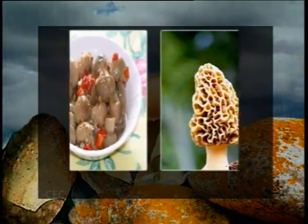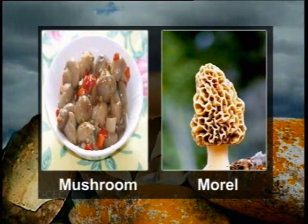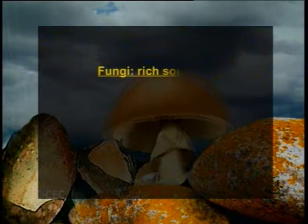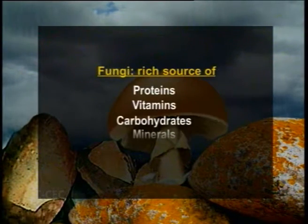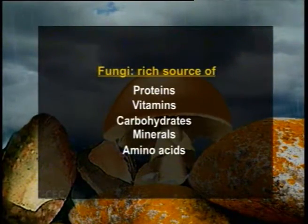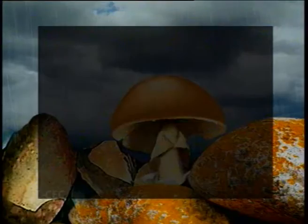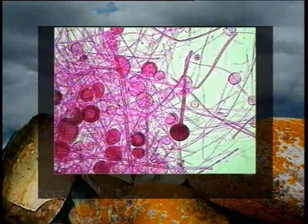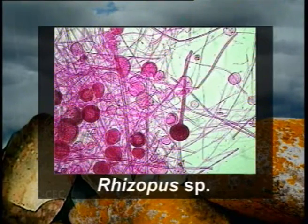Fungi provide a direct source of food for humans. Mushrooms and morels are the best examples of edible fungi and are now cultivated at a larger scale worldwide. They are a rich source of proteins, vitamins, carbohydrates, minerals, and amino acids. Yeast is also an important source of vitamins B and D. In addition, some foods which are not easily digested are made palatable by fermenting fungi — for example, soya bean and cassava, although rich in nutrients, cannot be easily digested.